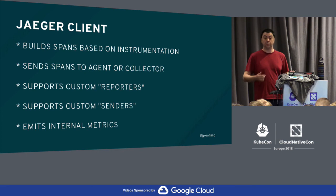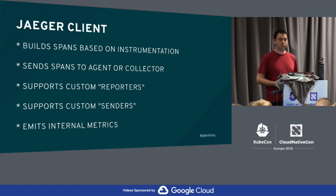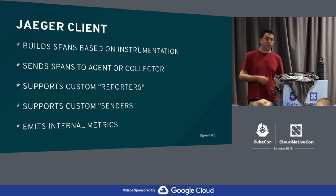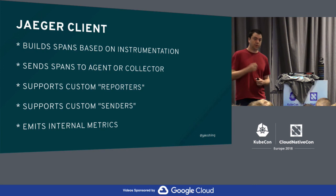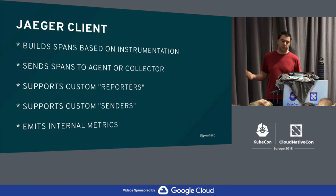The client is extensible — you can implement your own senders. HTTP and UDP senders are the two we have. It emits internal metrics, and for the Java client you can plug in the Micrometer integration. With that, you can plug any Micrometer backend — Prometheus, StatsD, JMX, or any other backend supported by Micrometer.